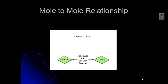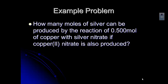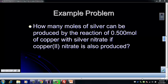Let's look at an example. The problem asks how many moles of silver can be produced by the reaction of 0.5 moles of copper with silver nitrate, if copper 2 nitrate is also produced. Our first step is always going to be to write the complete balanced reaction. This goes back to nomenclature and writing reactions, and then we're going to get into the mole part of it. It's a word problem, so we have to think about where everything goes.